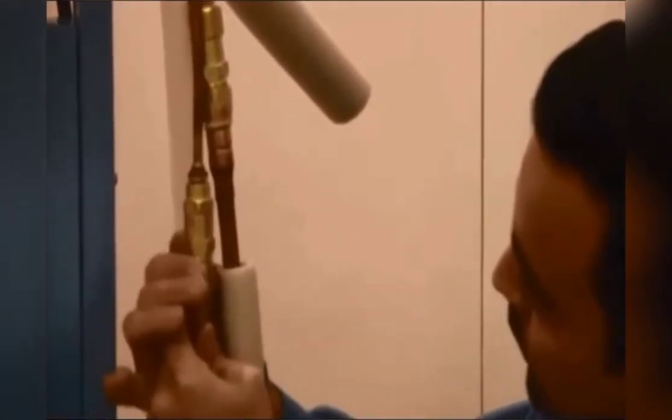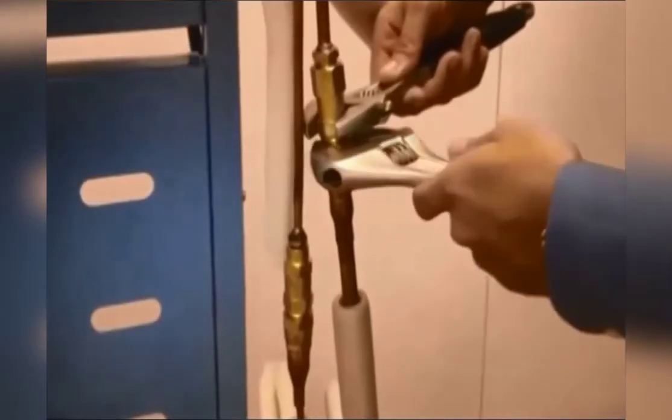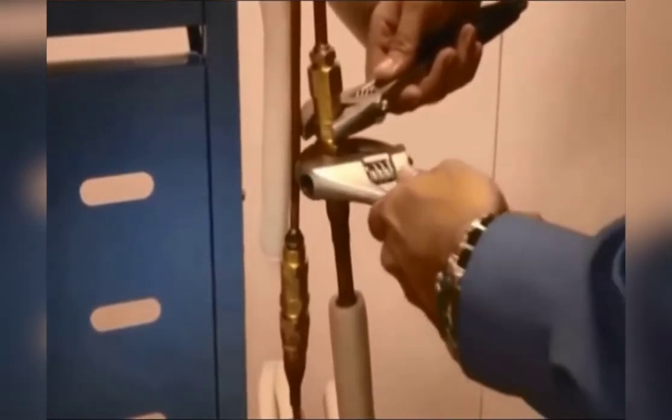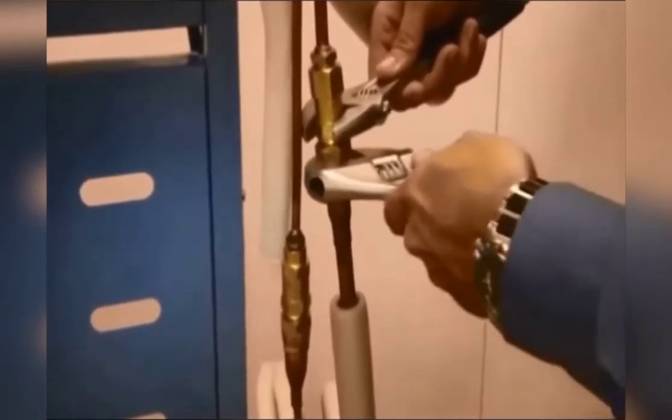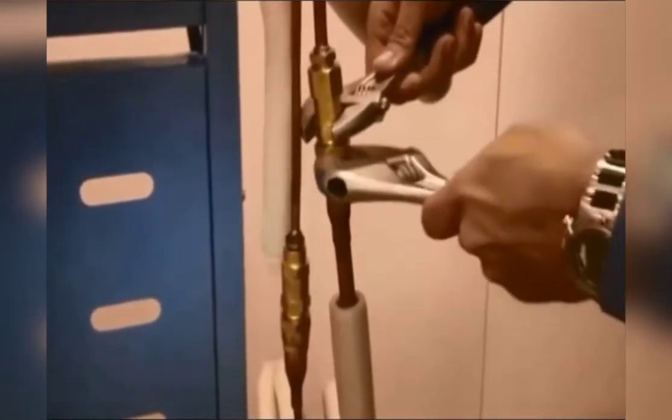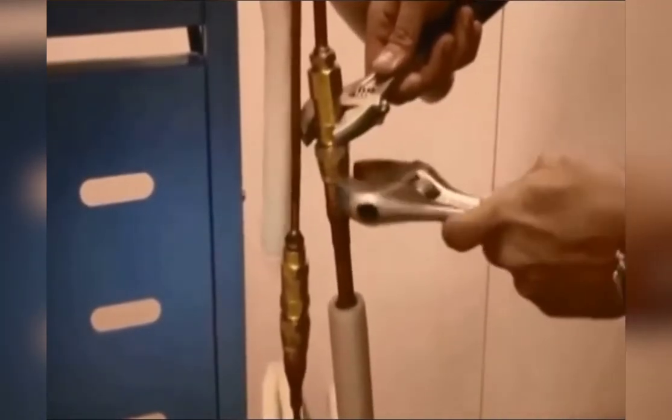Now we're going to install the refrigerant lines on the evaporator section. Once again, hand tighten your refrigerant lines. Then, using two adjustable wrenches, completely tighten your refrigerant lines.